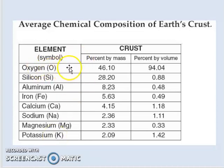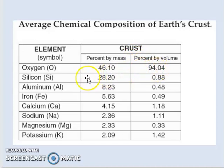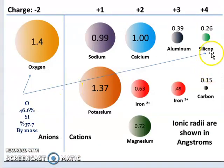Oxygen alone represents around 46% by mass of the earth's crust and represents around 94% by volume, while silicon forms around 28% by mass but less than 1% by volume. Why is this?